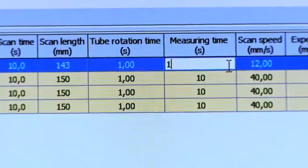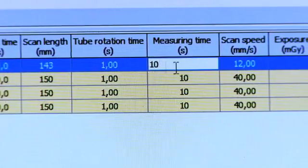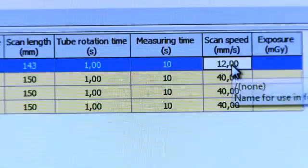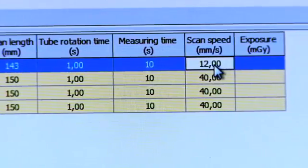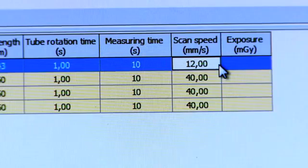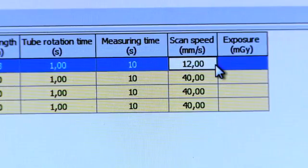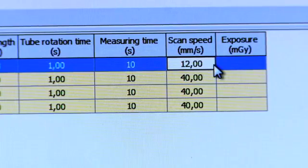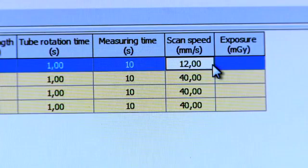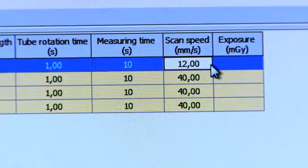Tube rotation time. Measuring time. This is the time it will take Ocean to collect the data from the measurement. This should cover the scan time. It is a good idea to choose parameters that shorten the scan time, for example, by selecting a higher pitch. When all parameters have been added, Ocean will automatically calculate the scan speed.